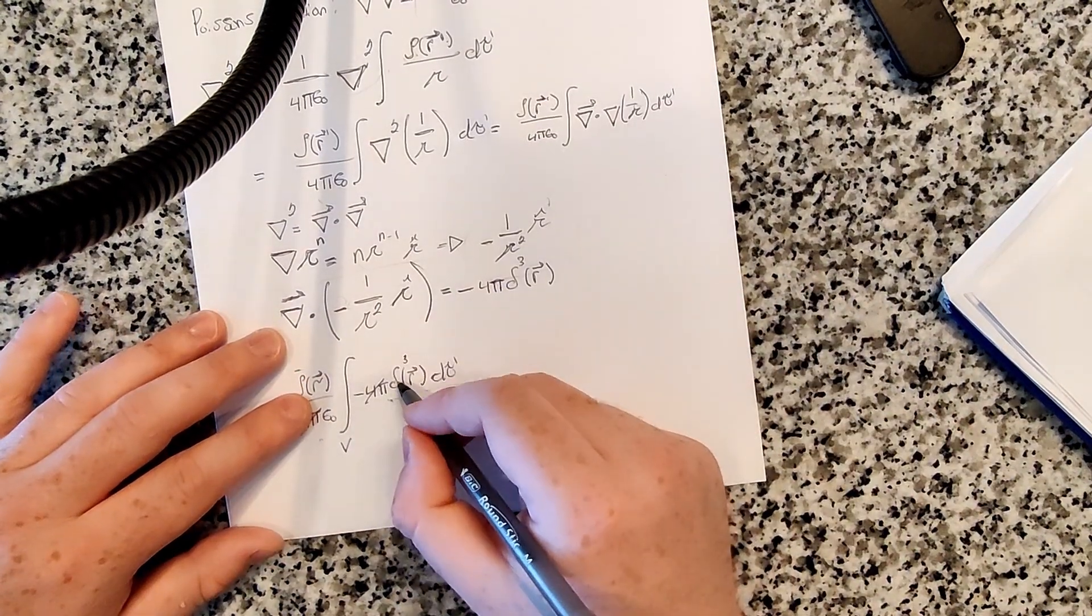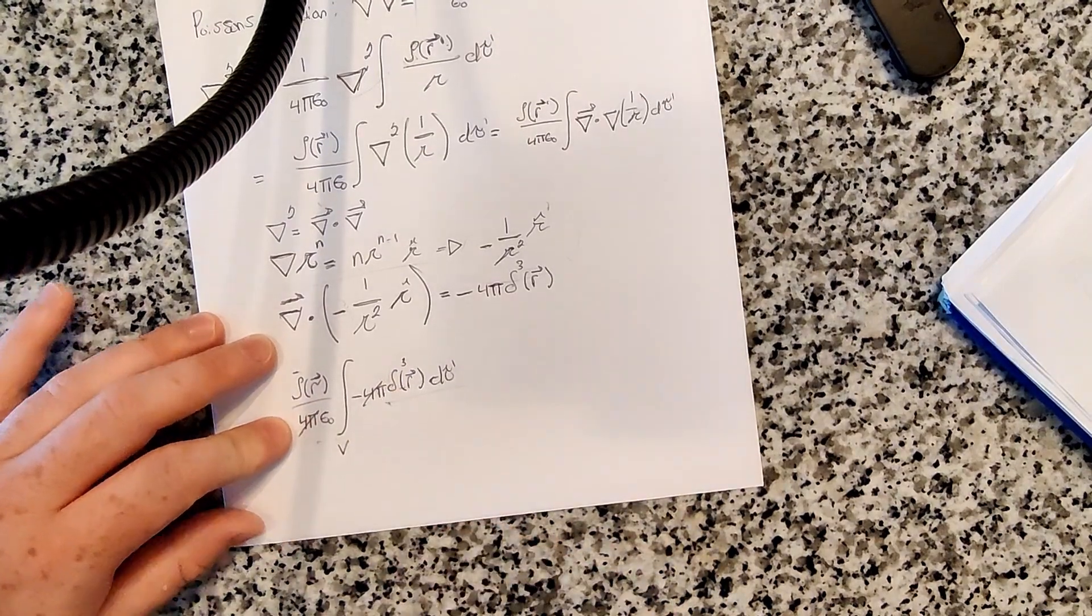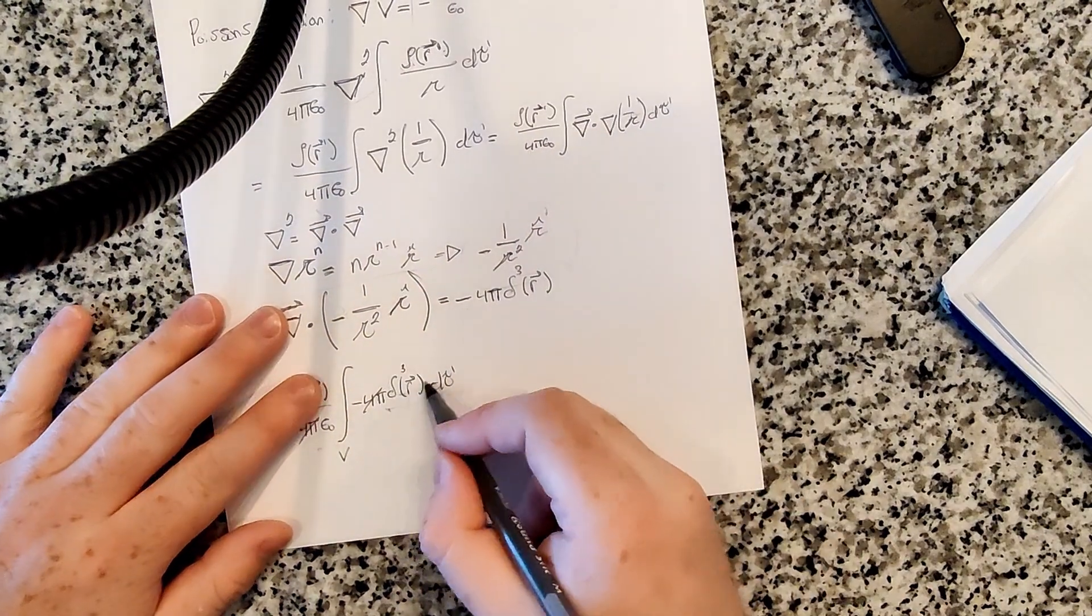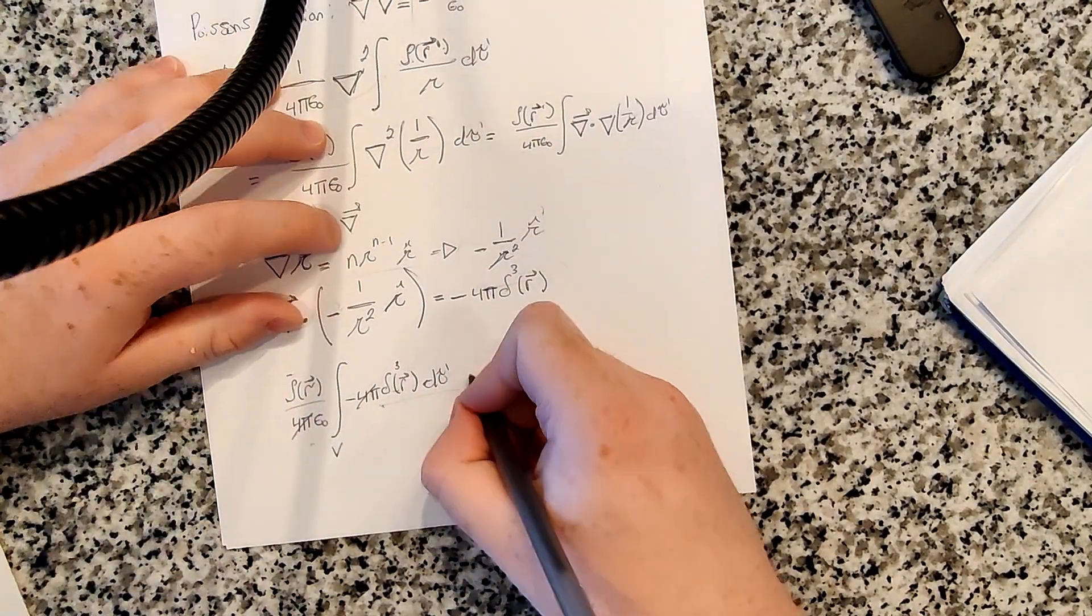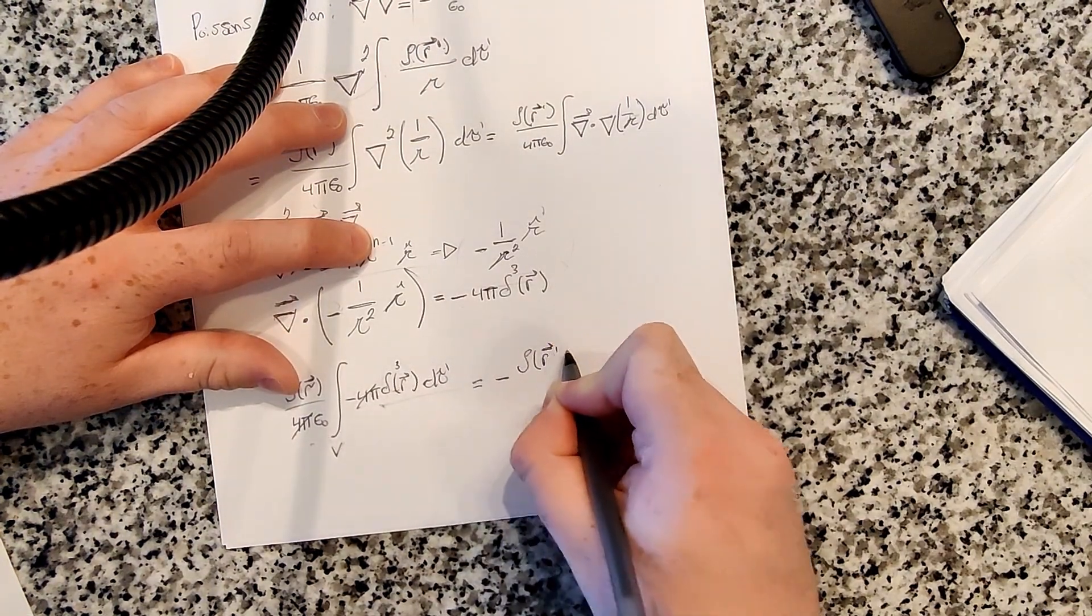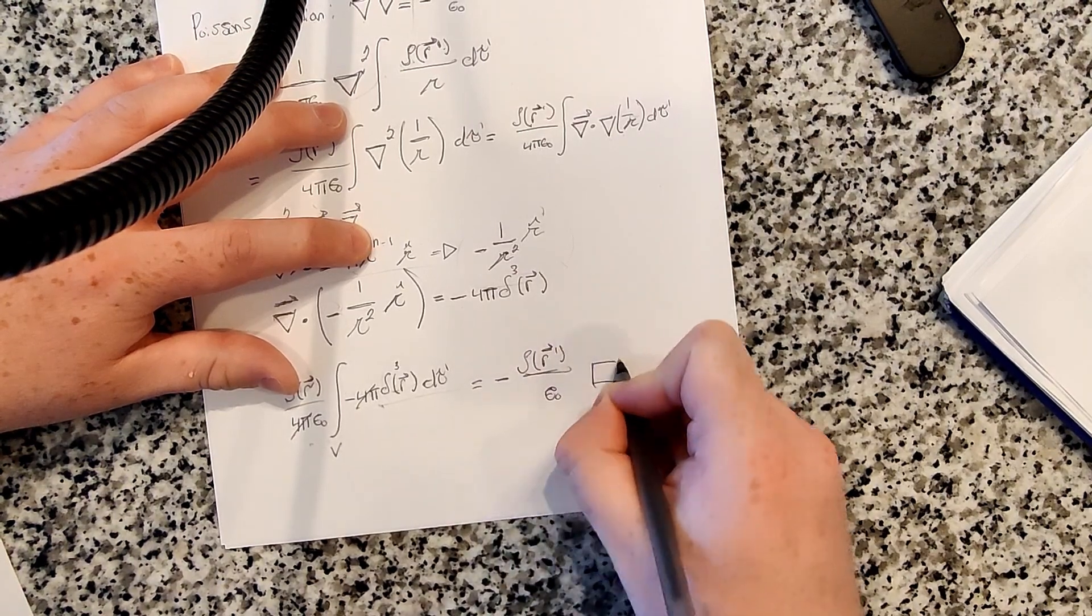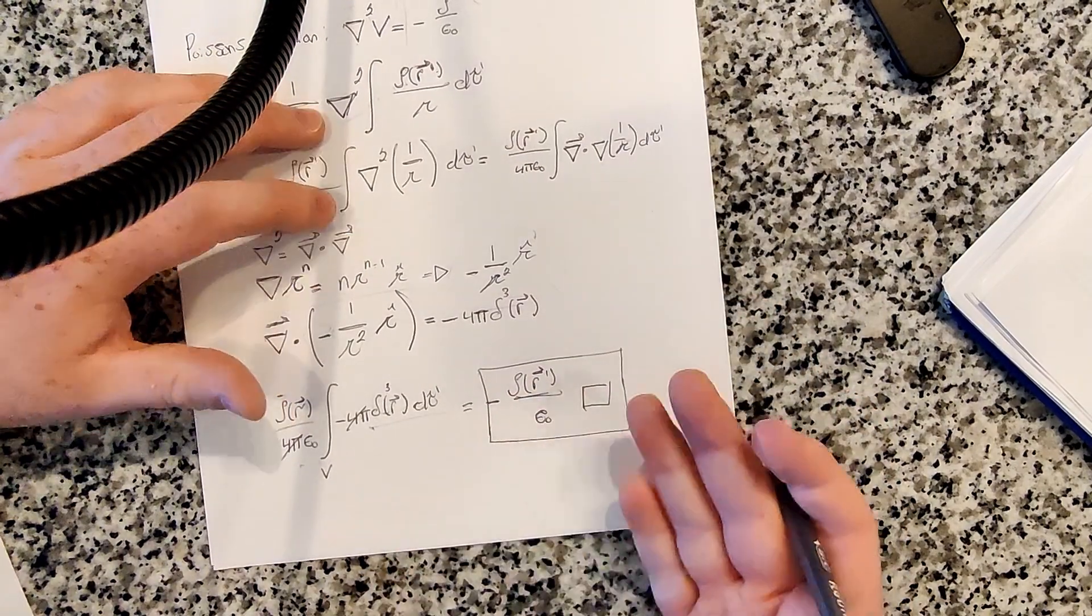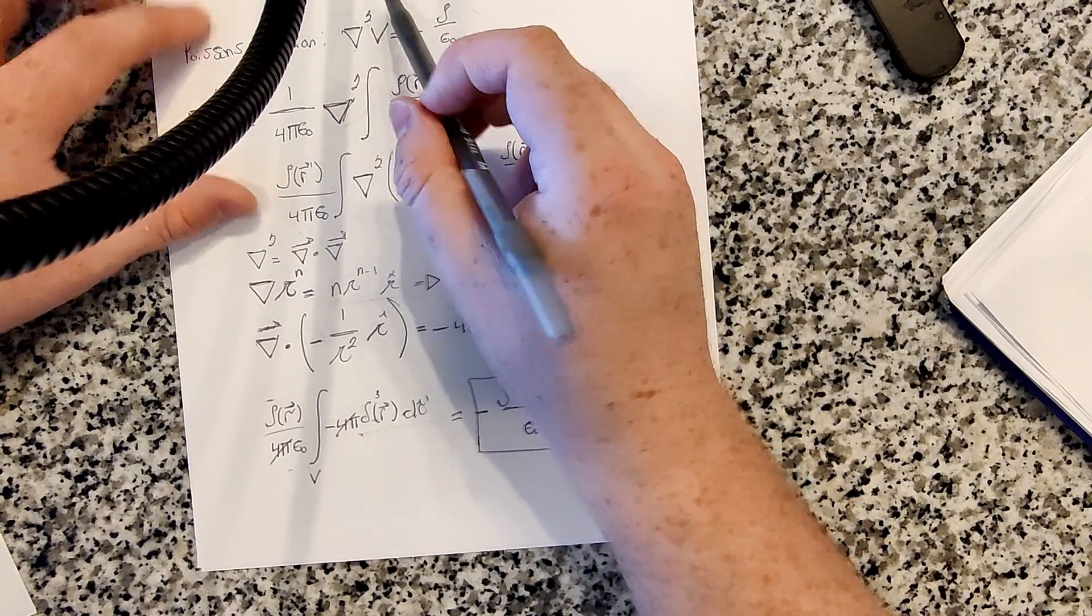Anyways, if you need to read up on the Dirac delta function, I suggest reading chapter one. There's a section in there that goes all through the one-dimensional Dirac delta function and three-dimensional Dirac delta function. So anyways, this integral becomes just one. That's what it becomes. And so what we end up with is just minus rho of r prime over epsilon naught, which proves our theorem. Or, sorry, it doesn't prove the theorem, it just shows us that this equation is satisfied from this potential.